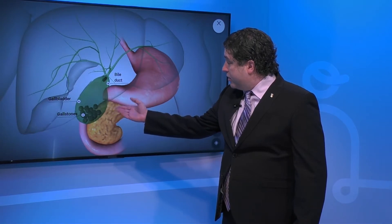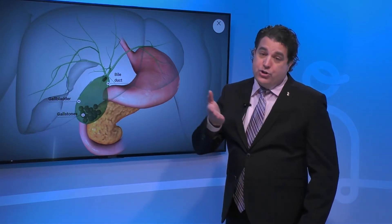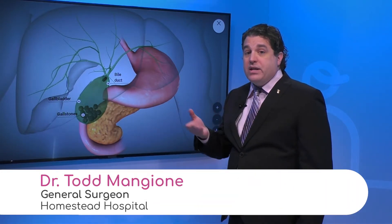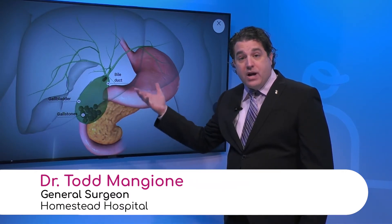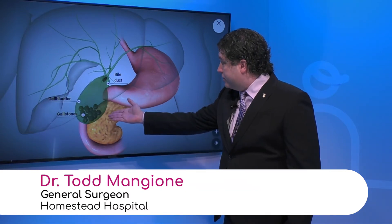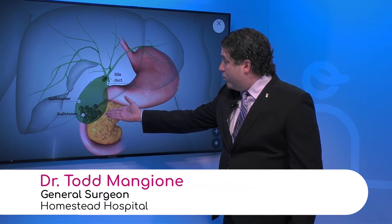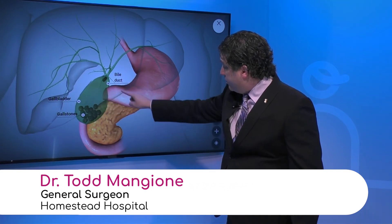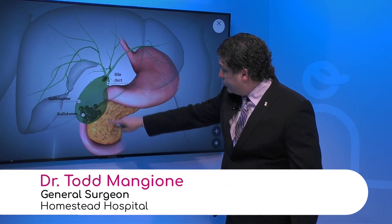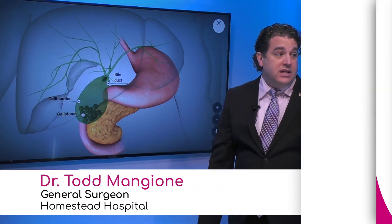Those little gallstones — what happens is you start off with that concentrated bile, which can turn into sludge like clay on a baseball diamond. Eventually, if the gallbladder keeps contracting and concentrating, you get gallstones. They sit at the bottom of the gallbladder, but when we eat and the stomach registers food, the gallbladder contracts. That's when you want that bile — which is essentially the body's detergent — released into the intestines to allow us to digest fat.